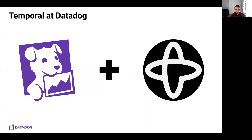Datadog is an observability platform that provides full visibility across your organization and allows everyone to have a shared understanding of your systems and the ability to immediately resolve problems when they arise. At Datadog, we care a lot about efficiently and safely releasing our software into production at scale, and over the last year we've been investing in Temporal as a key component of our internal software delivery platform.